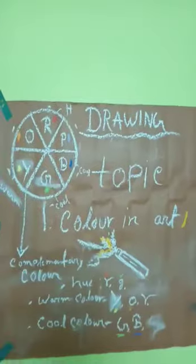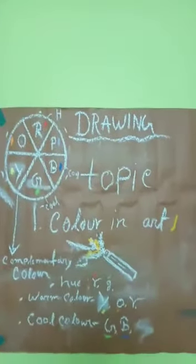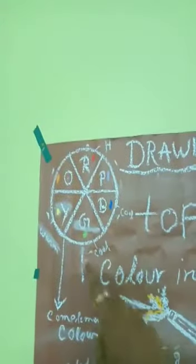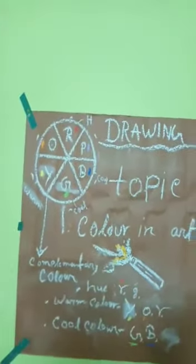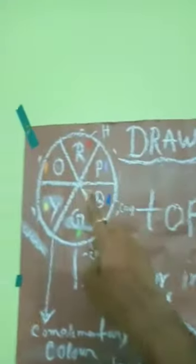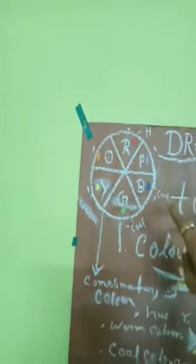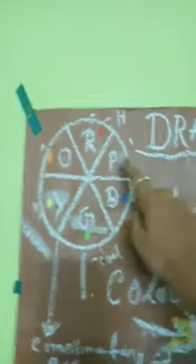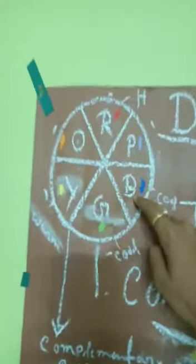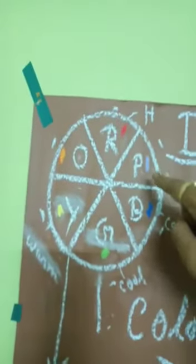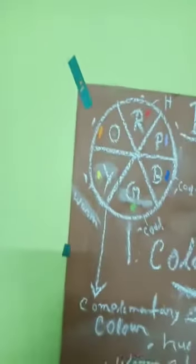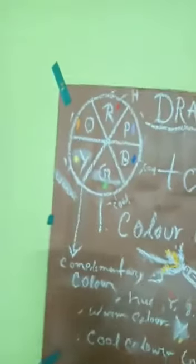Watch this picture — this is a color wheel, which is a key concept in art and color theory. The color wheel is divided into six colors: red, purple, blue, green, yellow, and orange. In Bengali: red is lal, purple is beguni, blue is nil, green is shabuja, yellow is holud, and orange is komola.